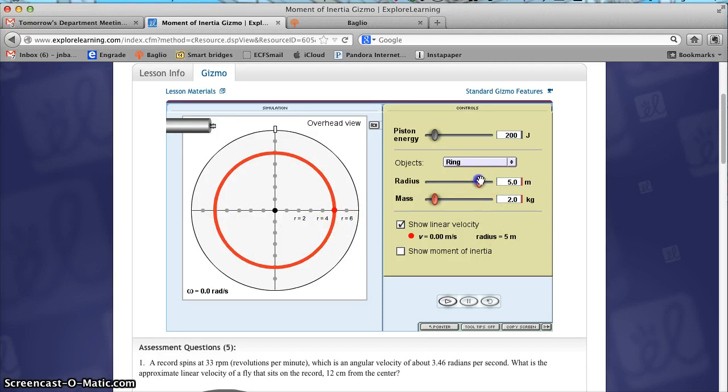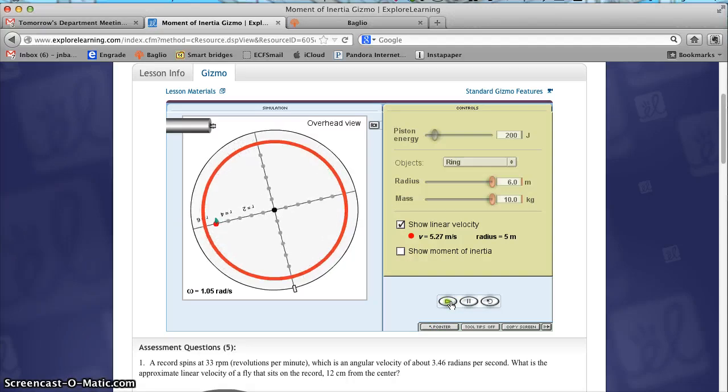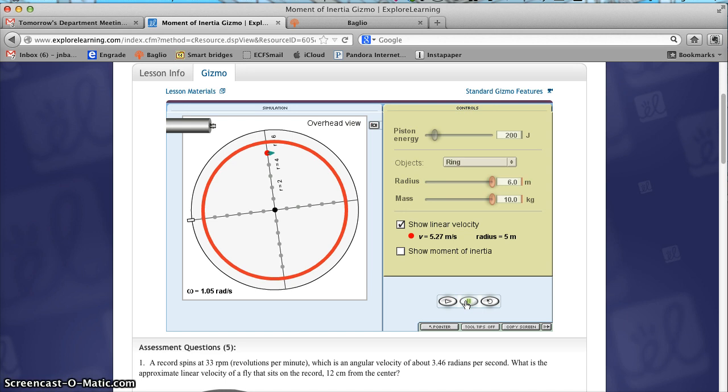And so what I want you to do is to put it out to the maximum mass and the maximum radius and then launch at 200 joules and see which goes faster, the ring or the disc of similar mass and dimensions.